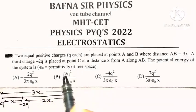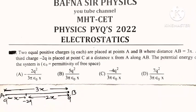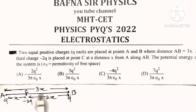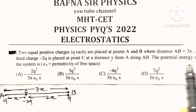Two equal positive charges Q each are placed at points A and B, where distance AB is equal to 3x. A third charge minus 2Q is placed at point C at a distance x from point A along AB. Then the potential energy of the system is to be found.